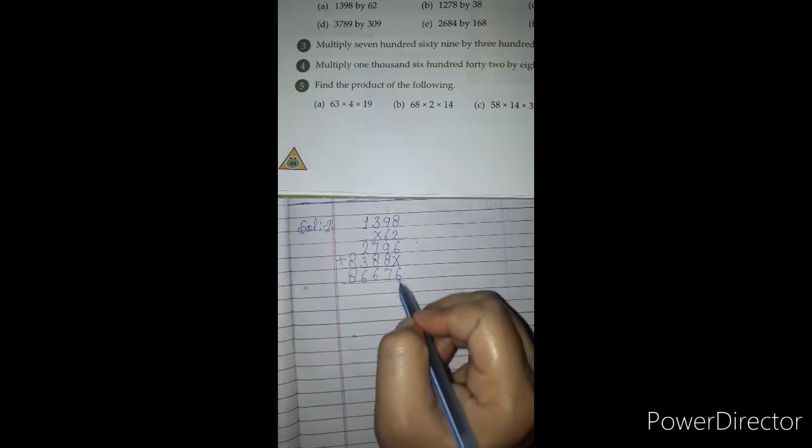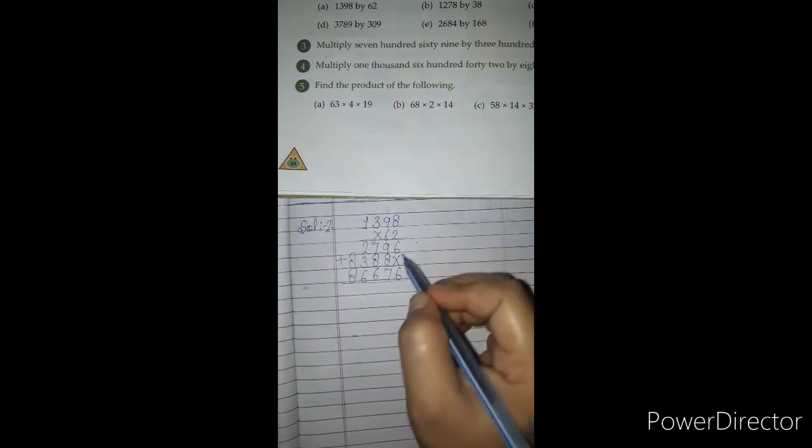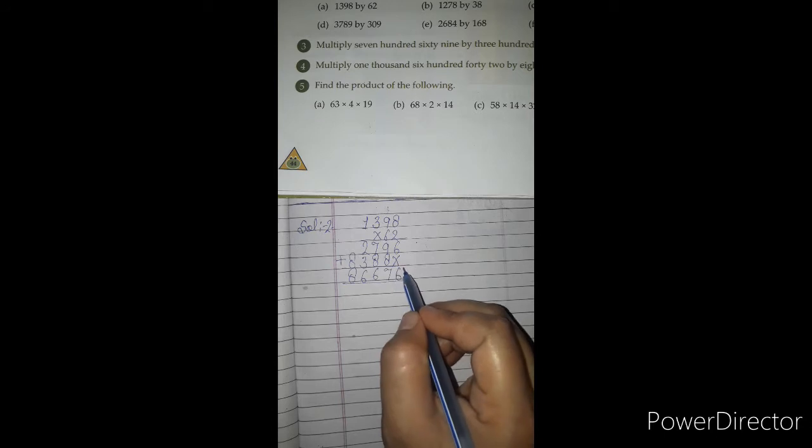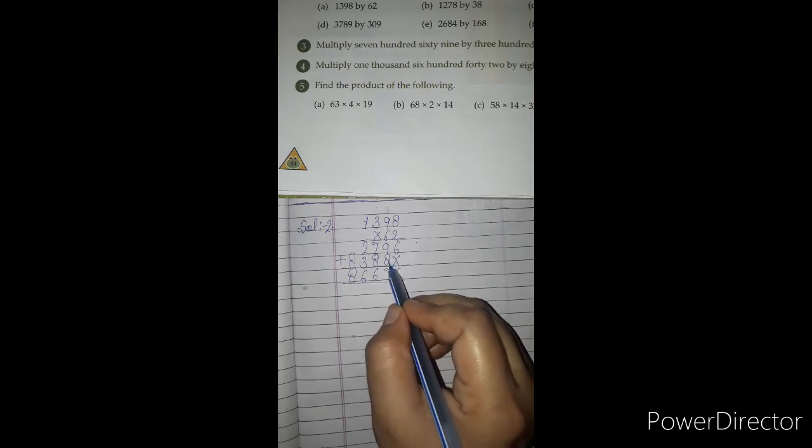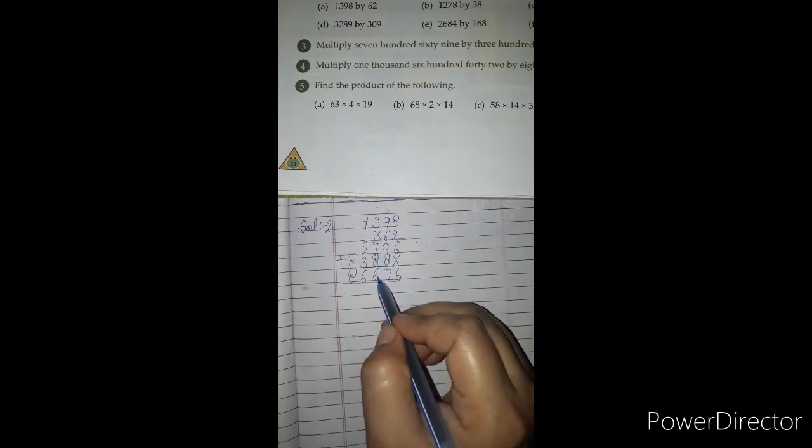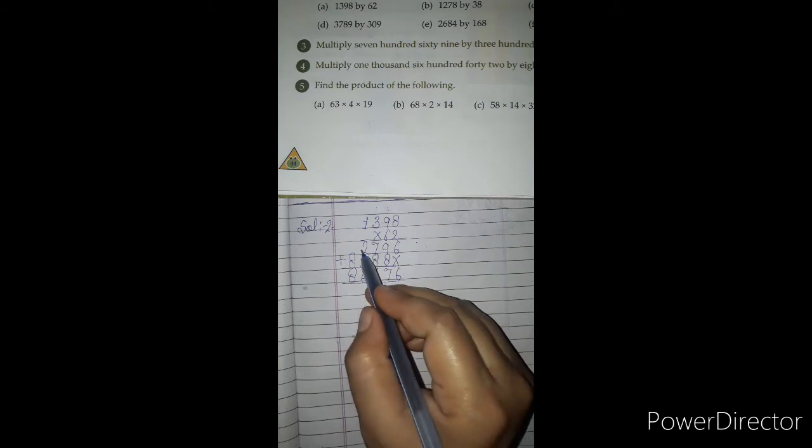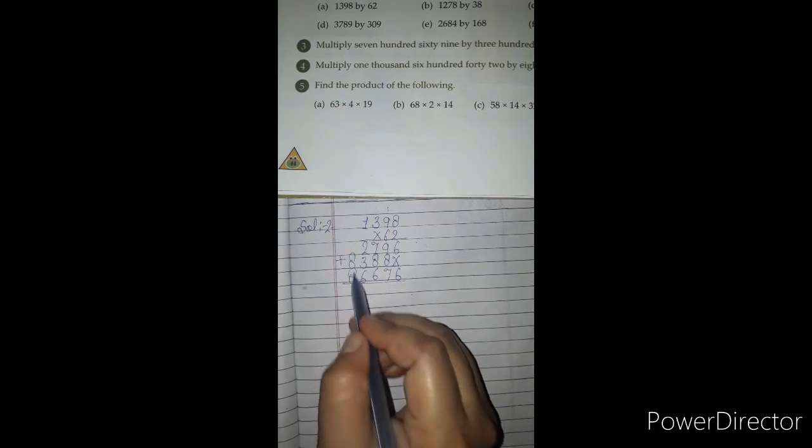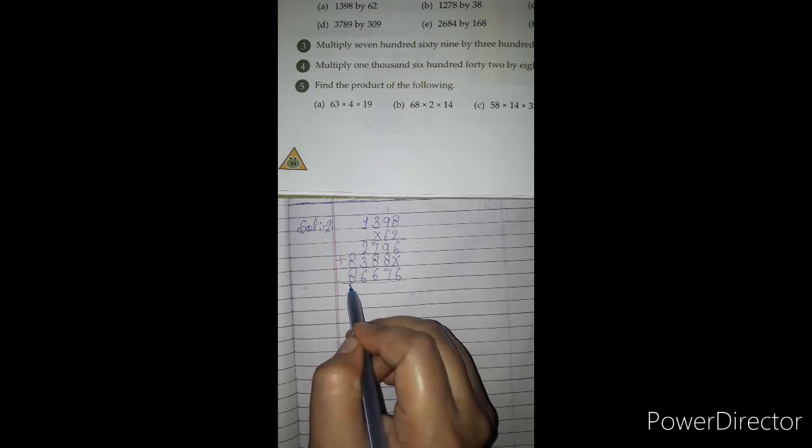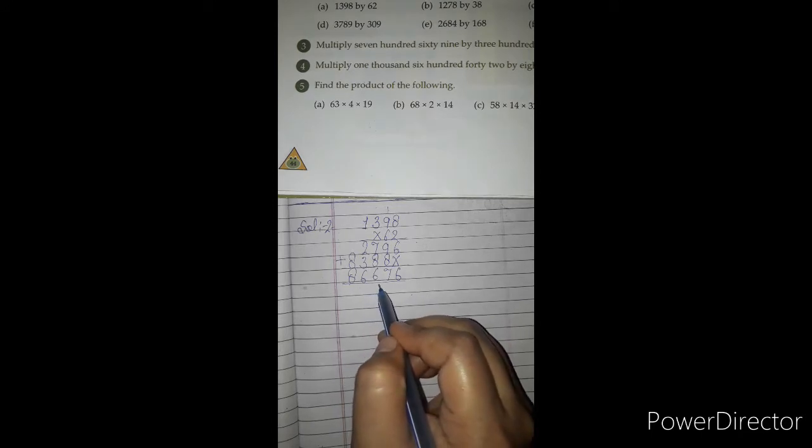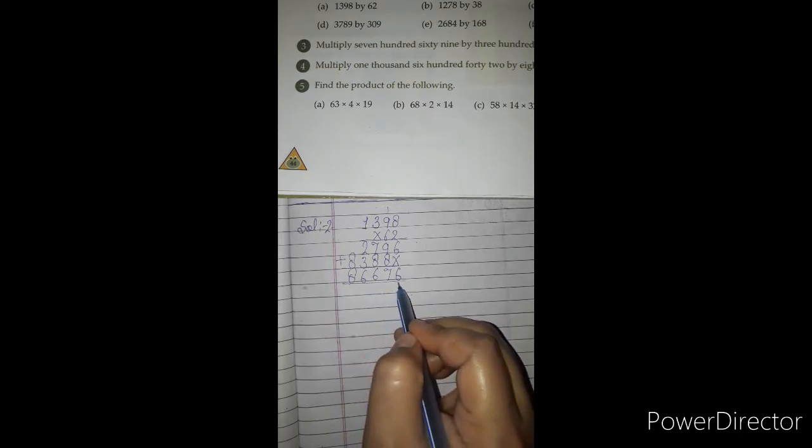Now, we add both. Below 6 we put cross or 0, so 6 remains 6. 9 and 8 is 17, write 7, carry 1. 8 and 8 is 16, add 1 is 17, write 7, carry 1. 3 and 3 is 6, add 1 is 7. Above 8 there is nothing, so 8 remains. So our answer is 86,676.